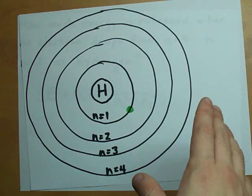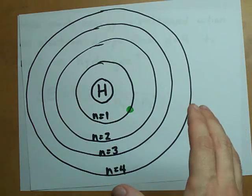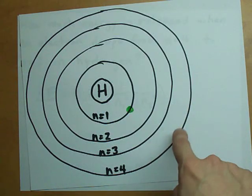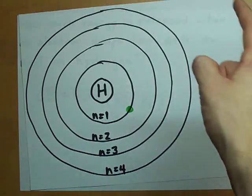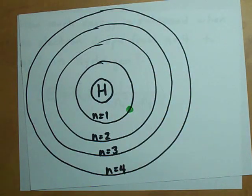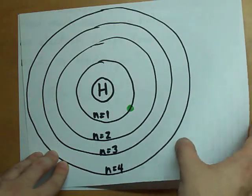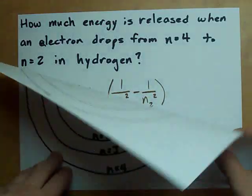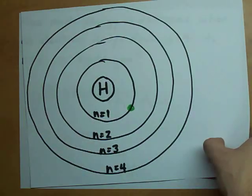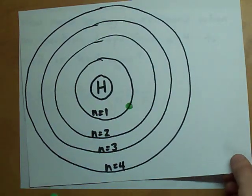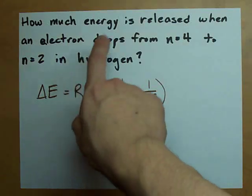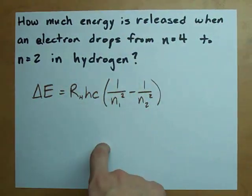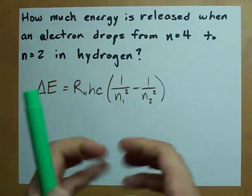But then, what goes up must come down. And if it jumped up to n equals 4, it's got to jump back down. But it can do that in a bunch of different ways. In this case, it looks like we were sitting in n equals 4, and we've jumped down to n equals 2. It'll eventually make it to n equals 1, trust me. But for now, we're talking about from n equals 4 down to n equals 2, how much energy is released.